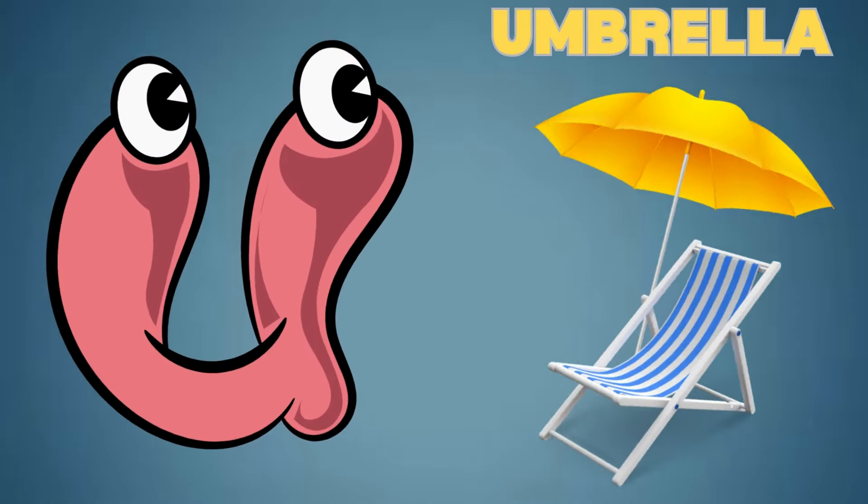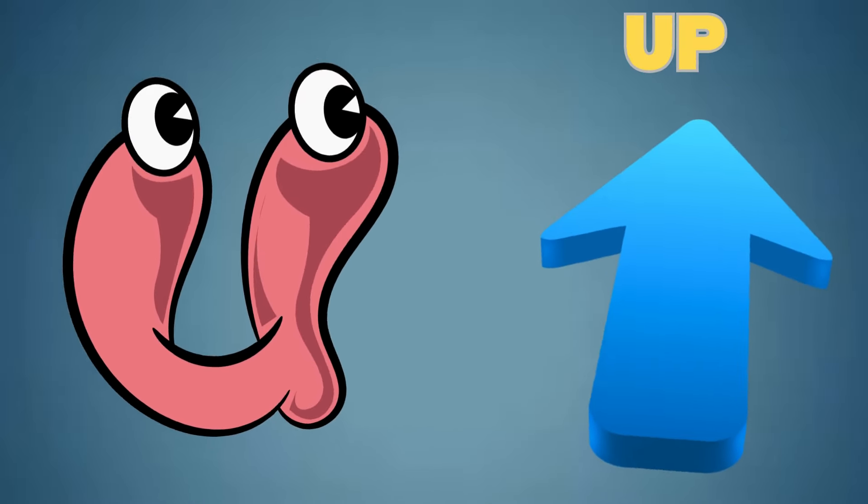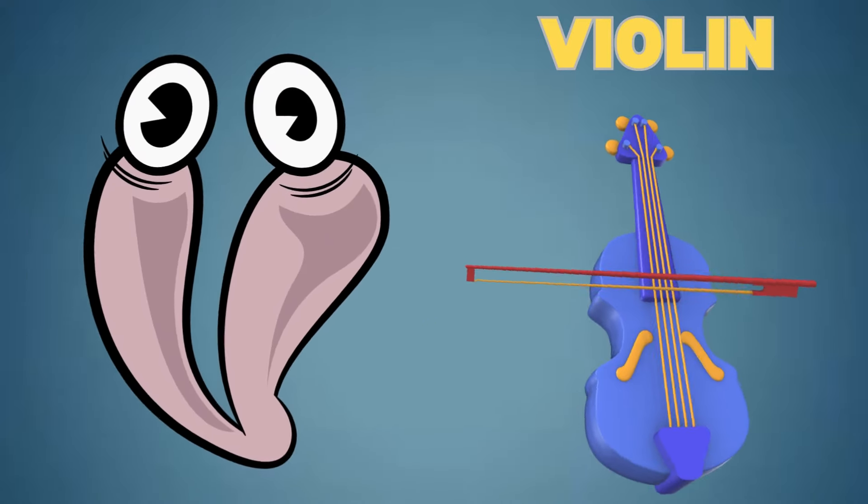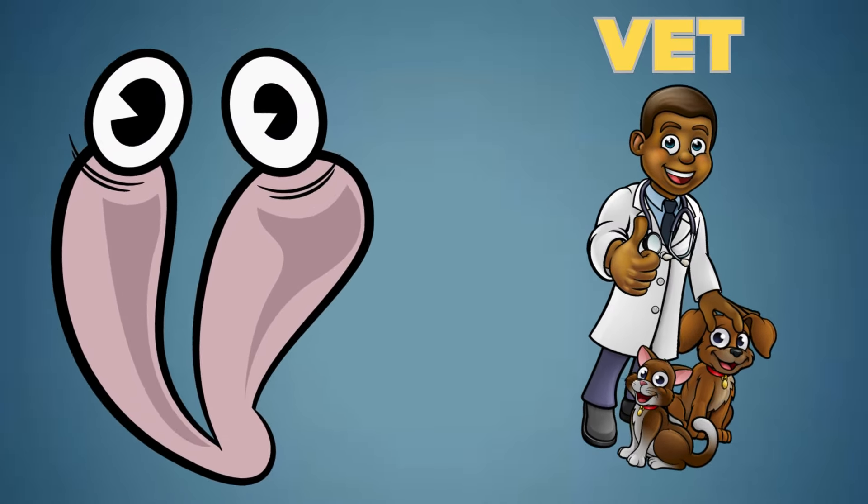U is for Umbrella. U is for Up. V is for Violin. V is for Vet.